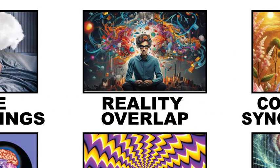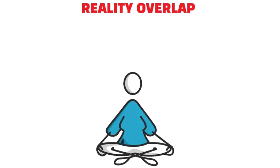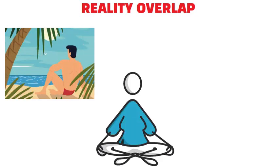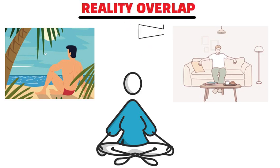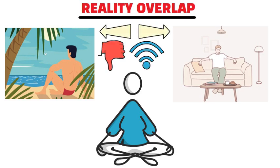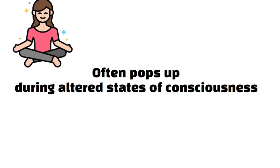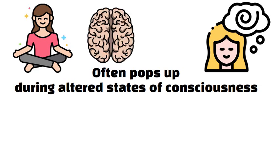Reality Overlap. Imagine this. You're deep in meditation, and suddenly, you're at your favorite beach and your cluttered living room at the same time. This is the mind-bending world of Reality Overlap, where the lines between here and there blur like a bad internet connection. This phenomenon often pops up during altered states of consciousness, like meditation or hypnosis, when our minds decide playing by the usual rules is just too mainstream.